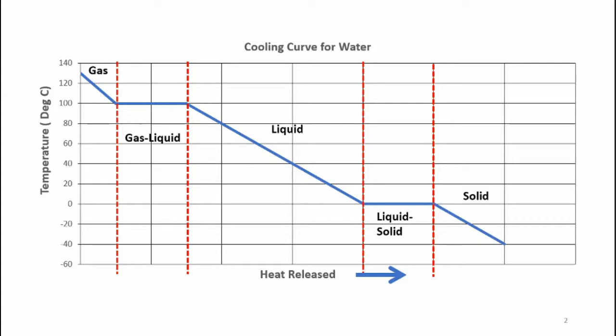If we put water vapor in a cold freezer, its temperature will begin to drop, as shown here on the cooling curve. When the temperature of the vapor gets down to the boiling point — 100 degrees C — it will begin to condense, going from a gas to a liquid.